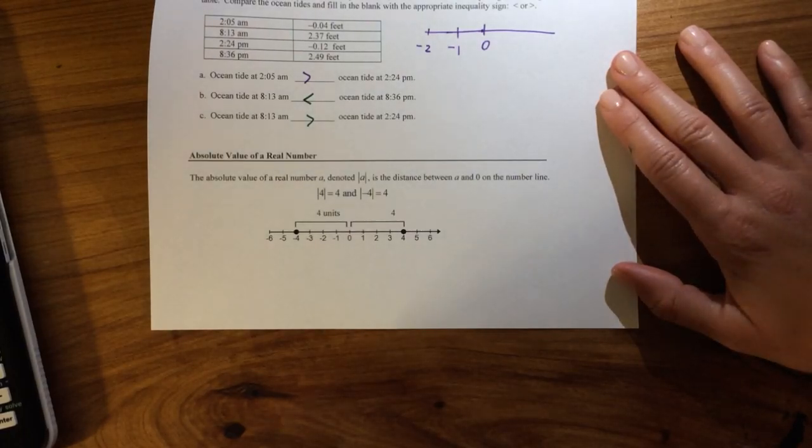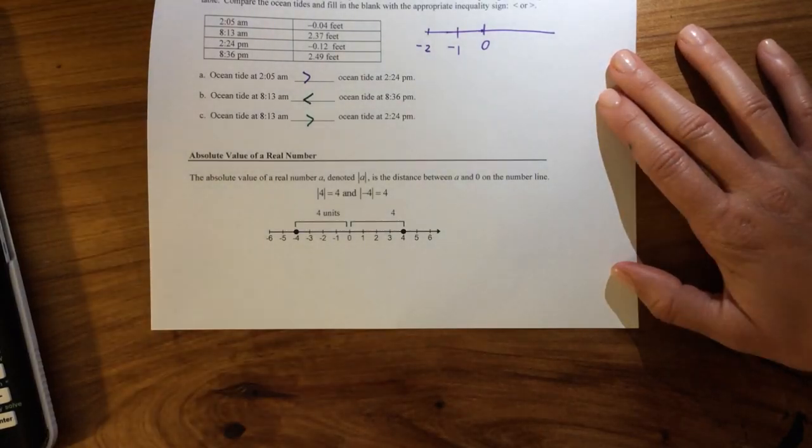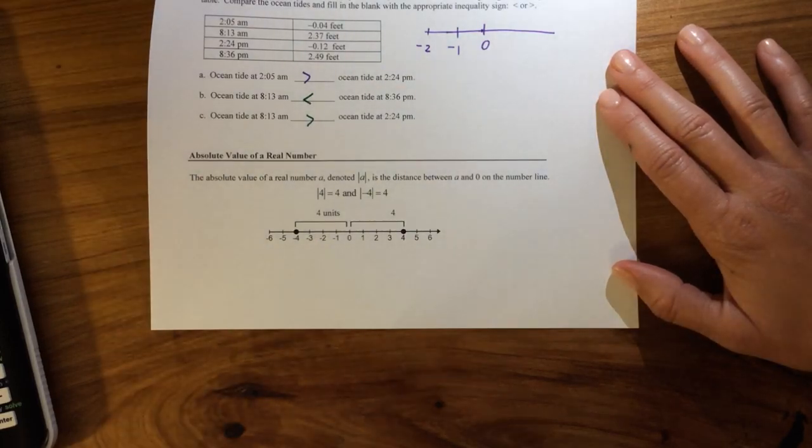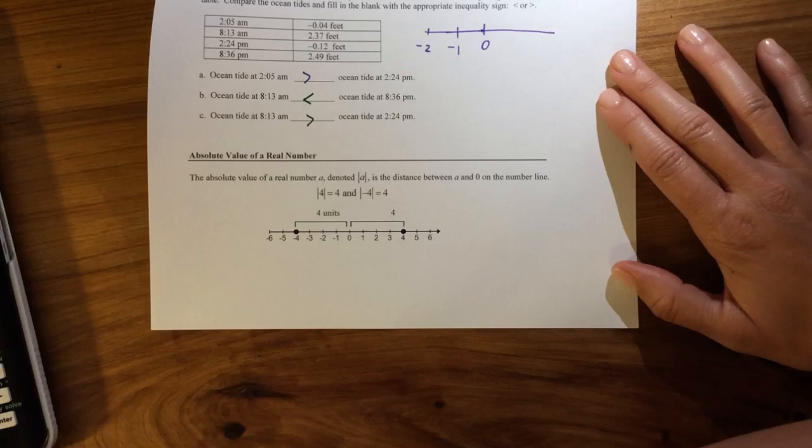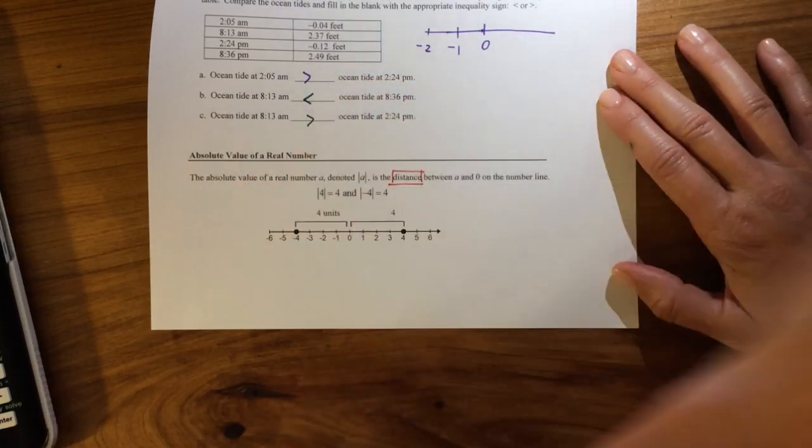So the absolute value of 4 is equal to 4, and the absolute value of negative 4 is also equal to 4. However, there is a huge major keyword in that definition, and that word is distance.